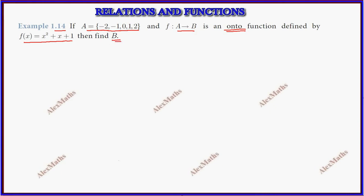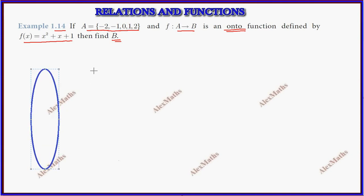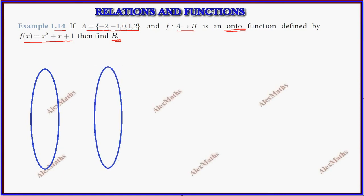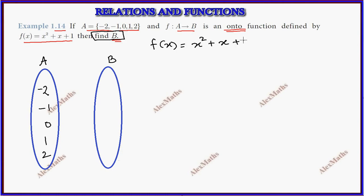Now for better understanding, one of the arrow diagram is set B. So set A, elements of set B. So set B — this is find B. Now for value of x, f(x) is equal to x squared plus x plus 1. Now the first element is minus 2.